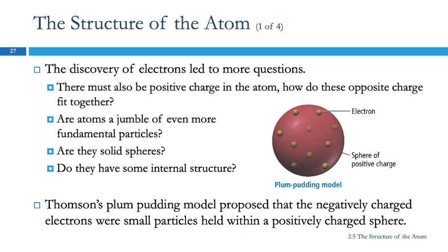There are electrons inside atoms, and this leads to more questions — this is how research works. You find one thing and that sprouts out in a whole bunch of directions. You have to choose which rabbit hole to go down. Some lead to nowhere, some lead to more rabbit holes and cool stuff. So if there are negative charges in there, there must be positive charges, because the atoms themselves were neutral. So now we know there must be positive charges — are there more particles than just the positive and the negative?